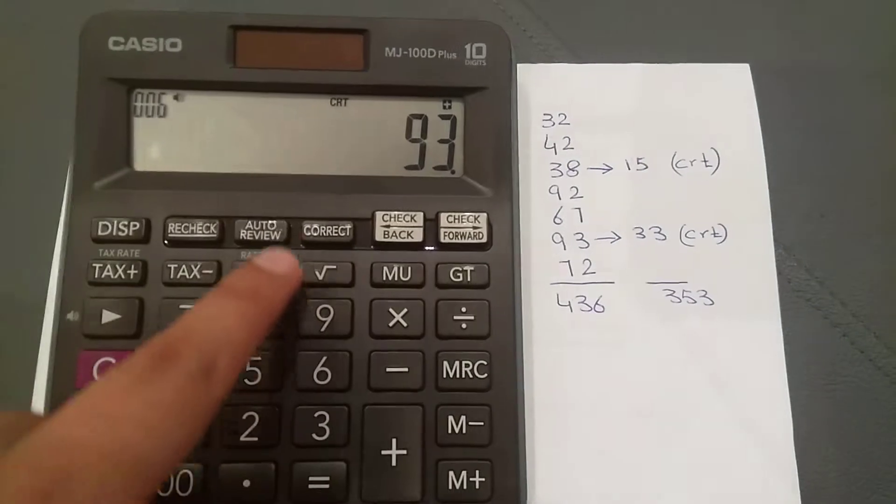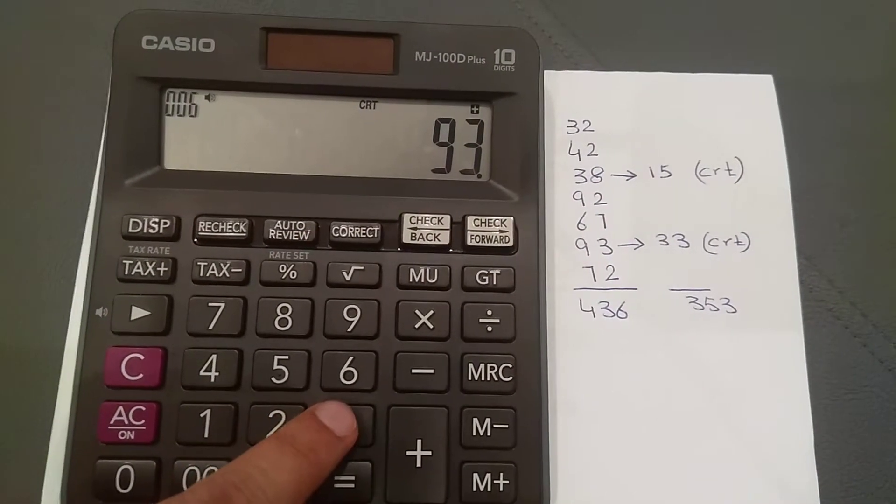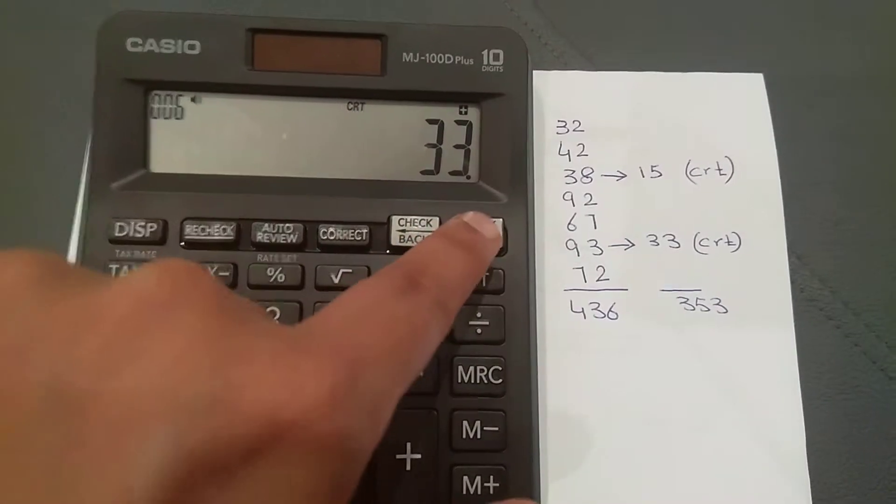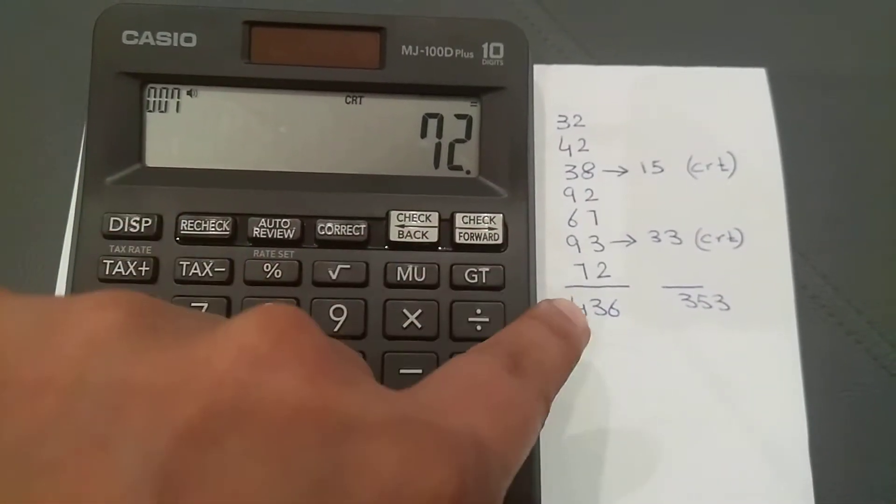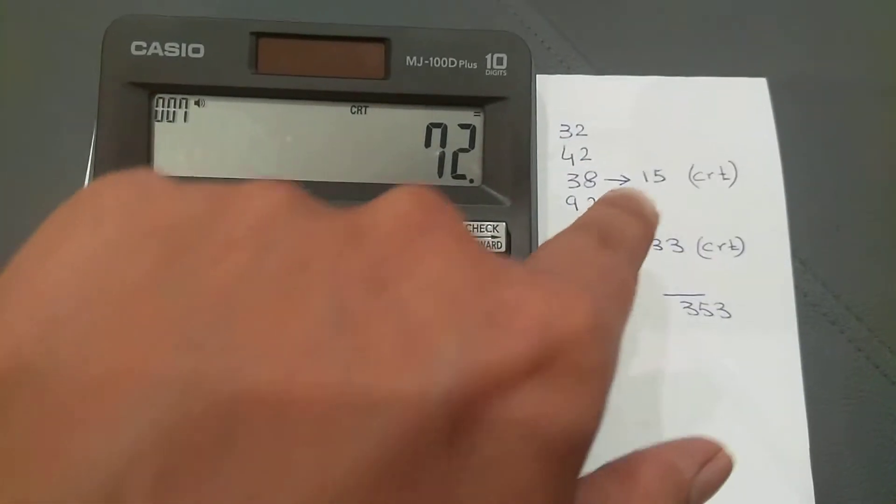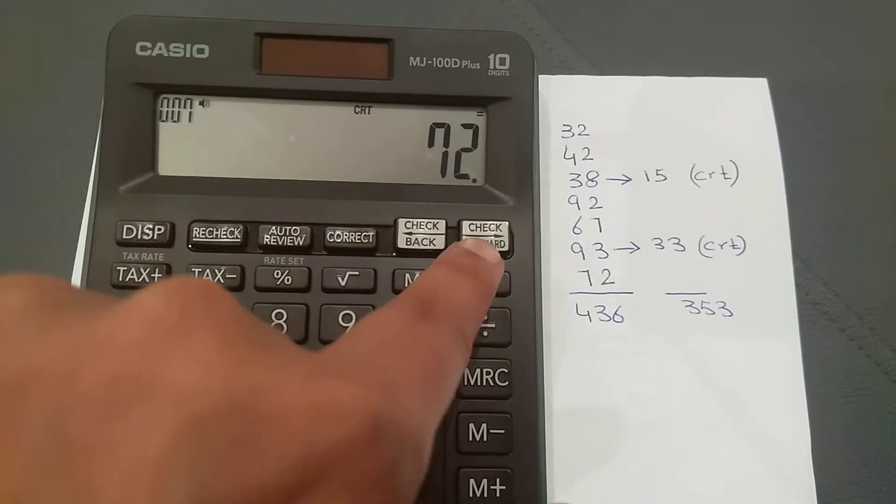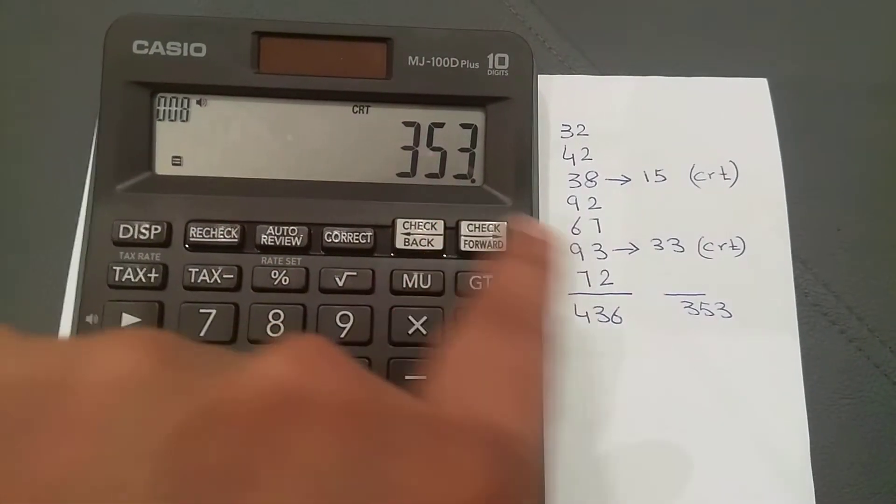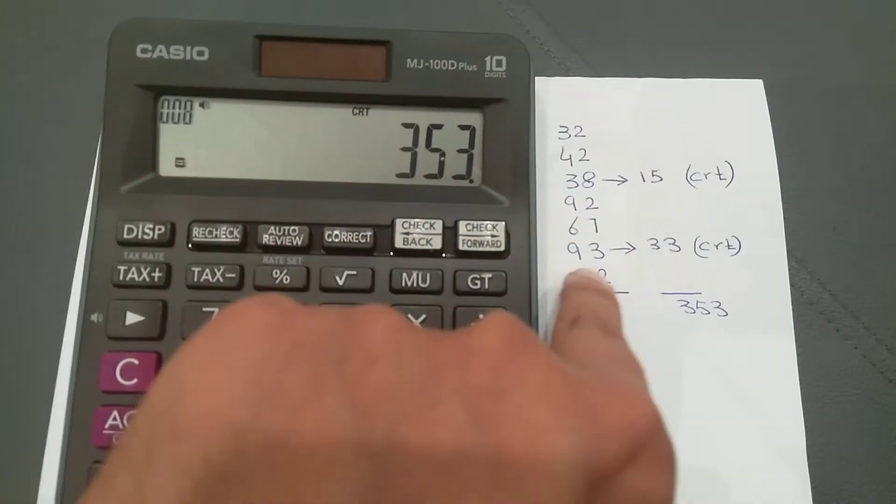I press correct and change it to 33, then move forward to 72. When I continue forward, it gives me the total value, automatically removing 38 and 93. The new total is 353.